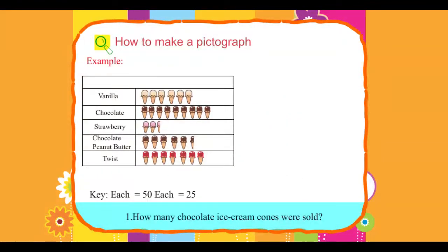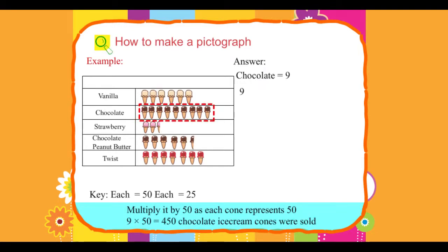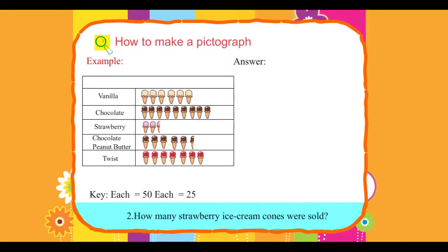1. How many chocolate ice cream cones were sold? Answer: Count the number of chocolate ice cream cones in the pictograph. Equals 9. Multiply it by 50 as each cone represents 50. 9 into 50 equals 450. 450 chocolate ice cream cones were sold.